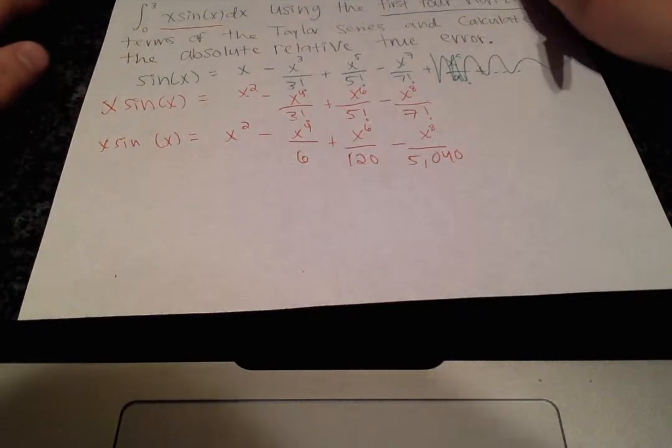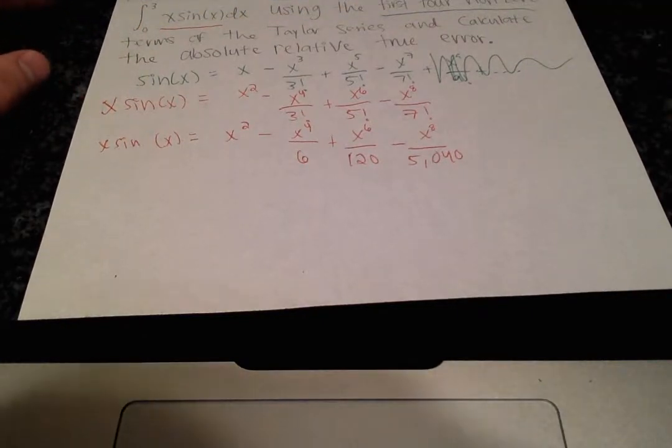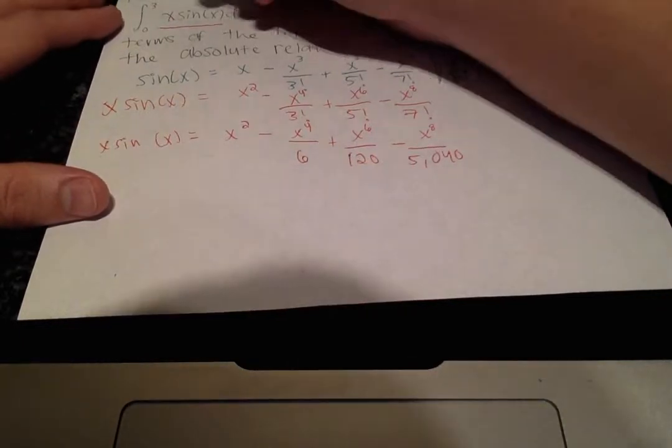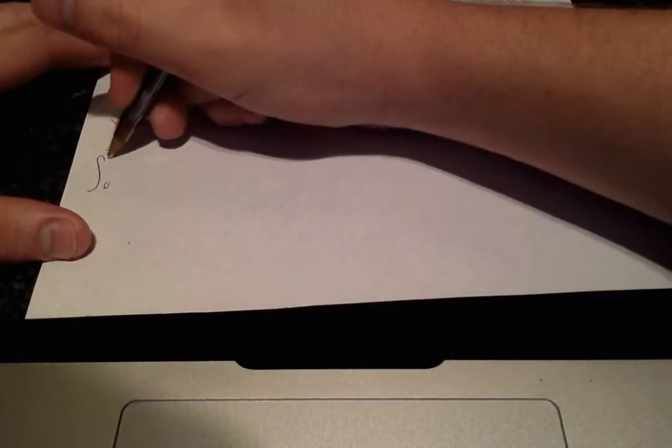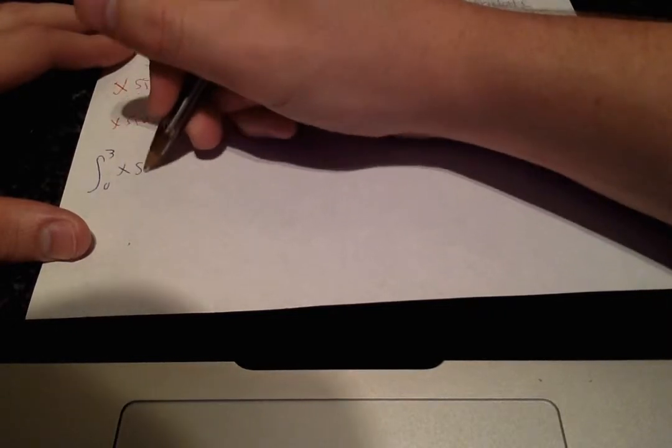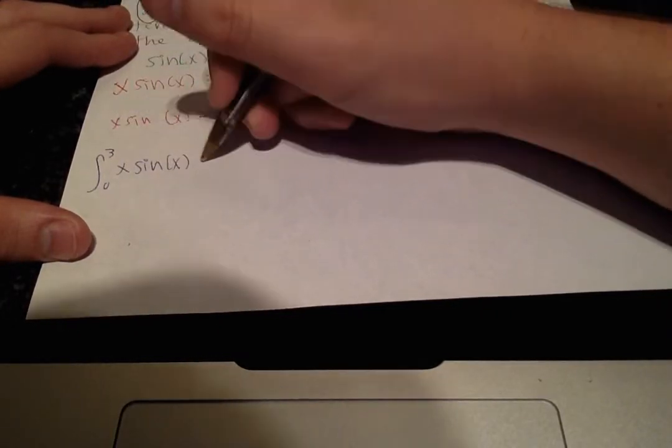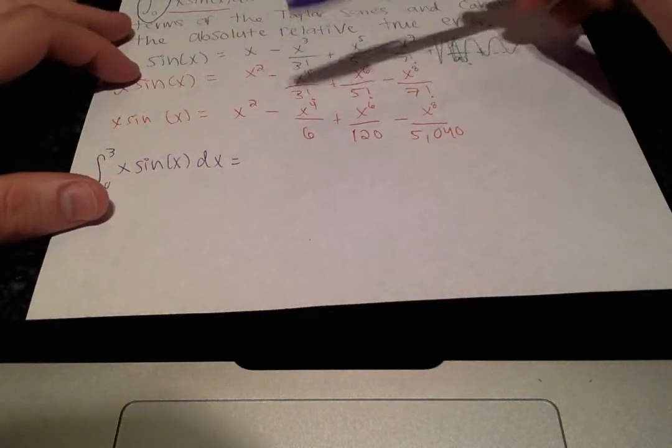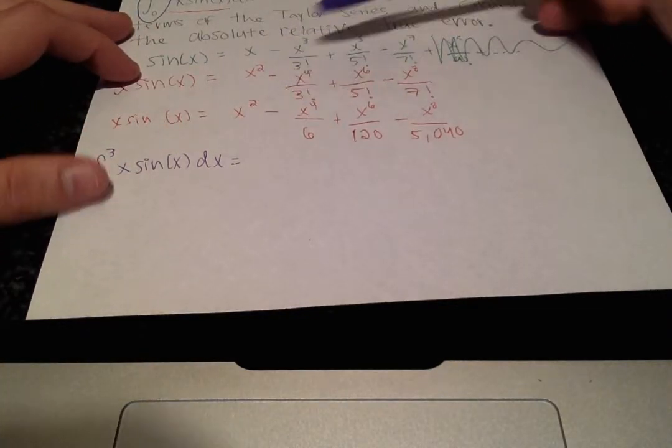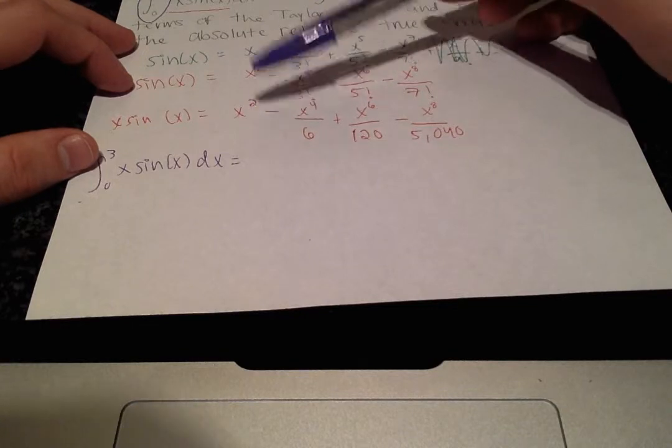Okay, and now if we want to take the integral of this from 0 to 3, we can do that. So just raise the x power by 1 and then divide the term by the new power.